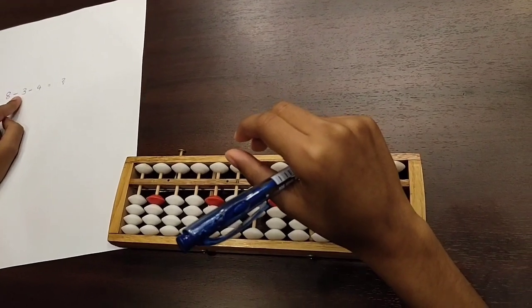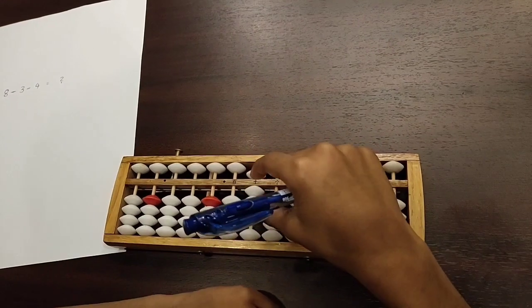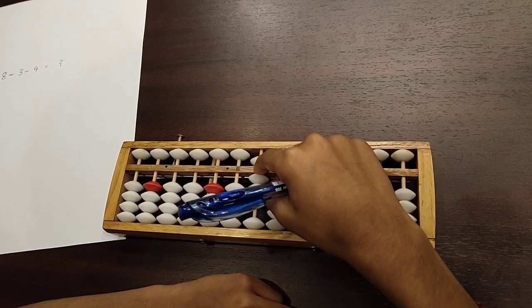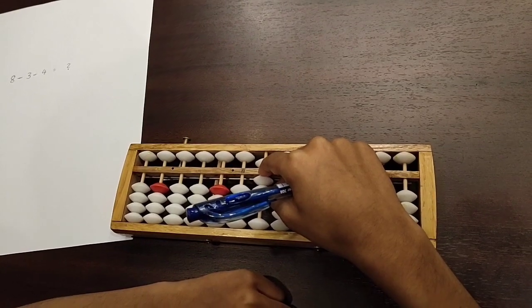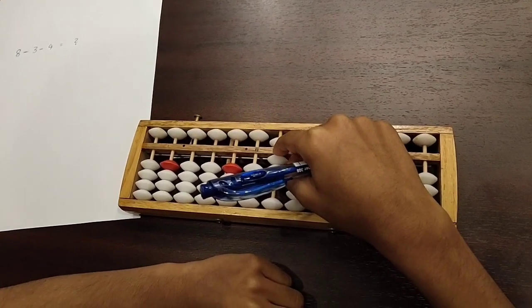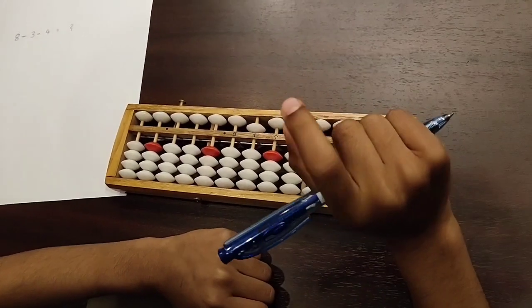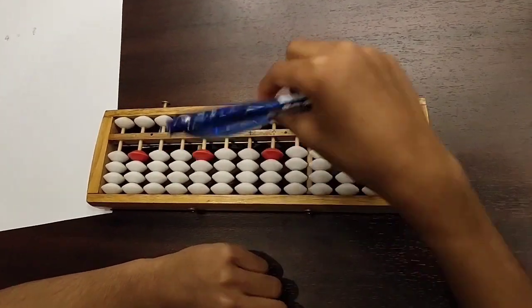Now you have to do minus 3. So you have to move 3 beads down that we just moved up. Because that is minus 3. Now you would be given a new number which is 5.